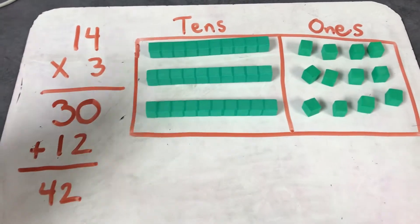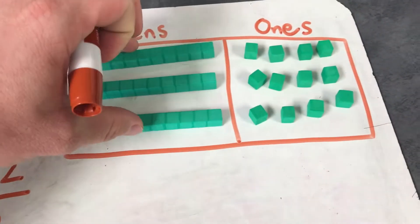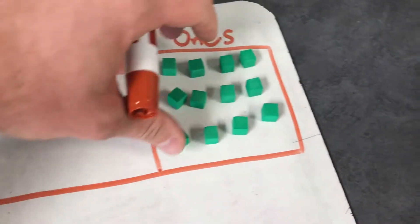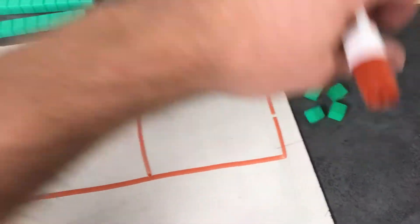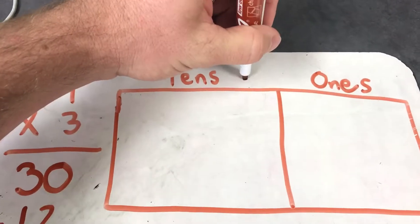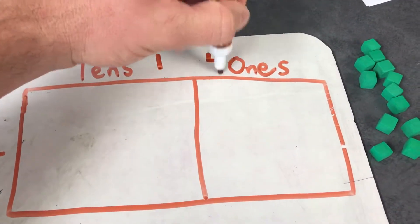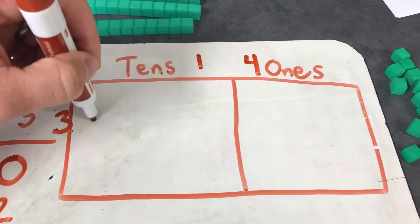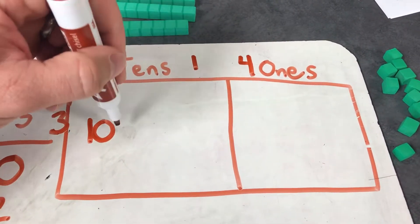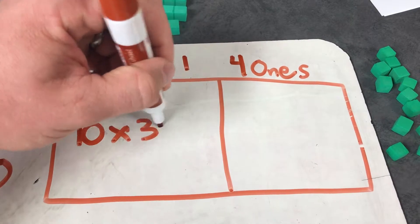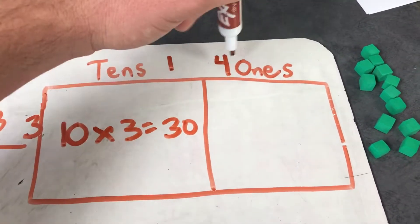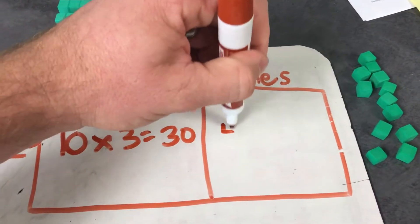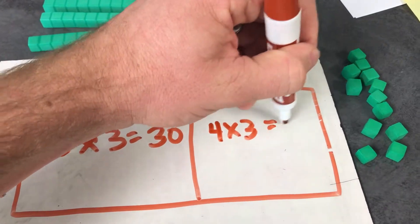All right. Another way we could do this without modeling with base ten blocks—I'll put these off to the side—what we could do is say we had one ten here, we had four ones here, and then we have three. So one ten, which is ten, times three equals thirty. Four ones times three—four times three equals twelve.